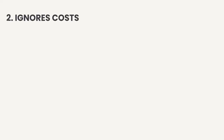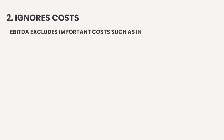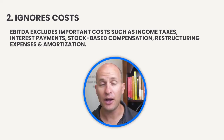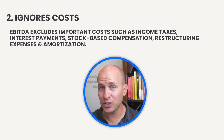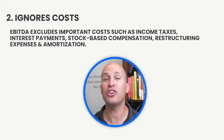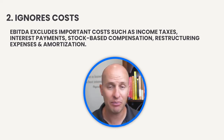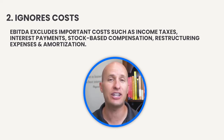Problem number two is all the other costs that EBITDA ignores. EBITDA excludes lots of actual business costs, such as income taxes, interest payments, stock-based compensation, restructuring expenses, and amortization. Depending on the business, these actual expenses might be hugely important to calculating the company's profit, so it's simply a huge mistake to dismiss them as not real expenses.